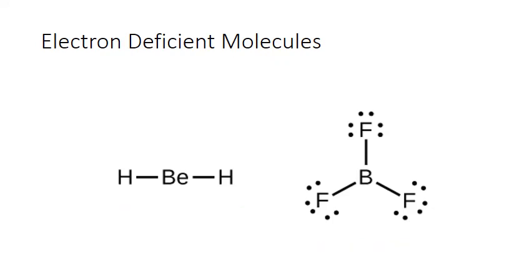Why don't these molecules form double bonds so the central atom has a full octet? In beryllium dihydride, there simply aren't enough extra electrons to share. Beryllium only has two valence electrons — it's from column two of the periodic table — and each hydrogen brings one, giving us four total. All four are used in the two single bonds, with none left over as lone pairs to share.